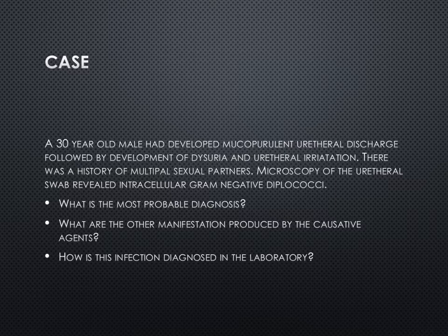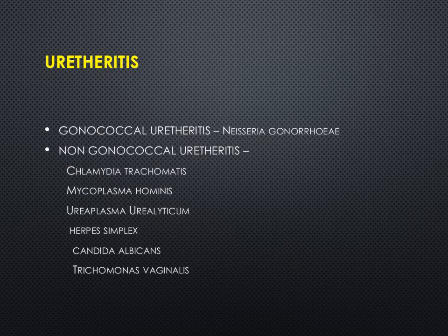What are the other manifestations produced by the causative agent, and how is the infection diagnosed in the laboratory? Now coming particularly to urethritis — where there is inflammation and discharge from the urethra — it has been divided on the basis of gonococcal and non-gonococcal. If Neisseria gonorrhoeae is causing it, it is called gonococcal; other causes are classified under non-gonococcal.